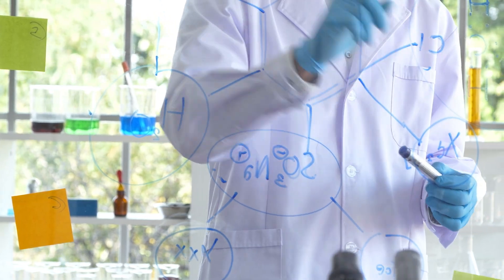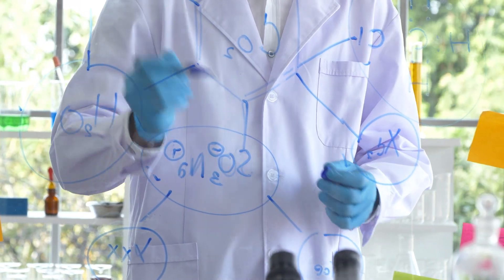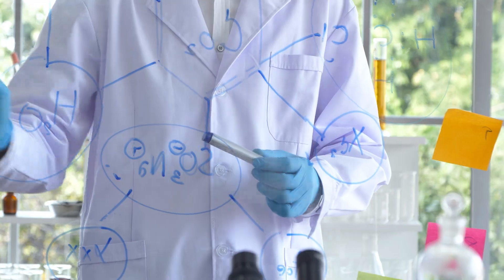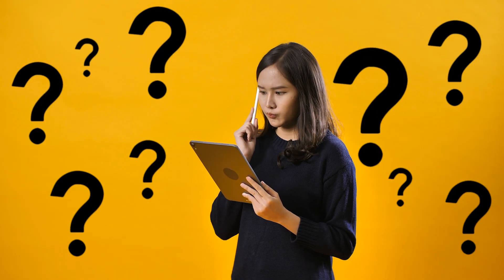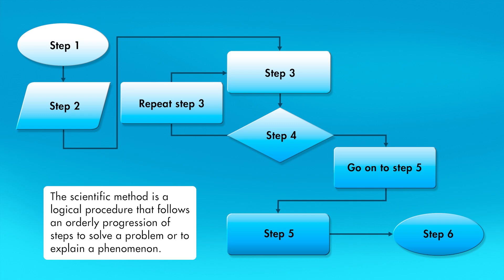Physical science is about problem solving, using scientific concepts and principles to answer questions about the physical world around us. If you are presented with a complicated problem, what steps do you take to solve it? When scientists have problems to solve, or when they are confronted with observable evidence they cannot explain, they employ a useful procedure called the scientific method. The scientific method is a logical procedure that follows an orderly progression of steps to solve a problem, or to explain a phenomenon.